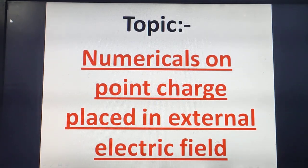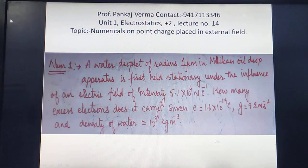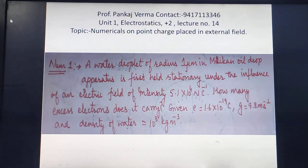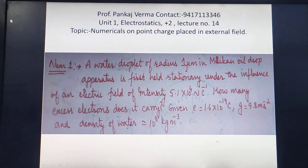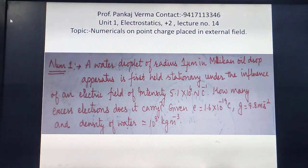The first numerical is: a water droplet of radius 1 micrometer in a Millikan oil drop apparatus is first held stationary under the influence of an electric field of intensity 5.1 × 10⁴ newton per coulomb. How many excess electrons does it carry? Given the value of elementary charge e, g, and density of water.